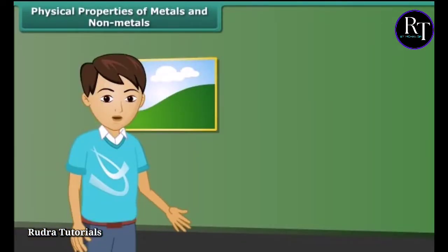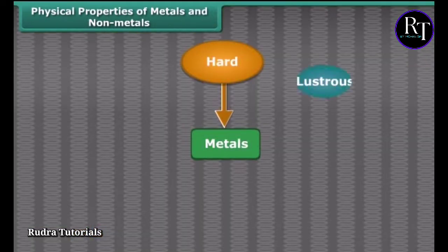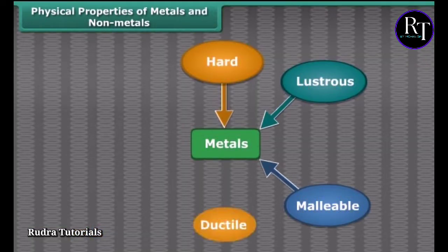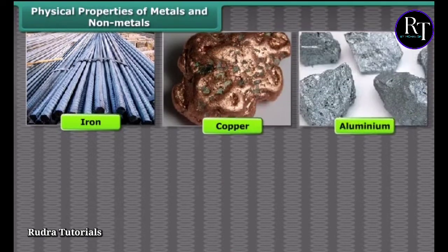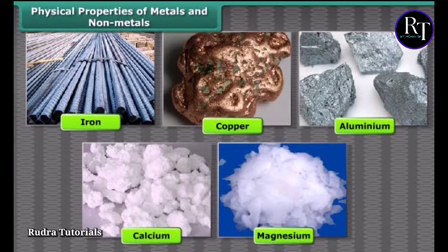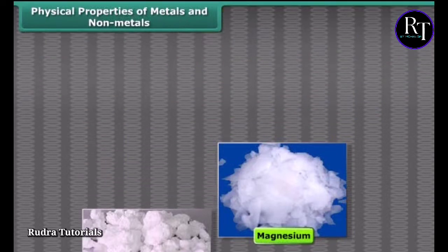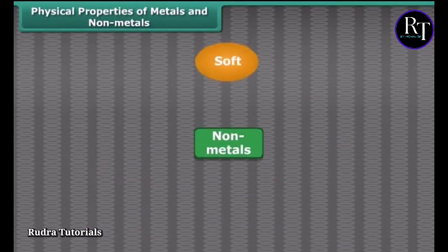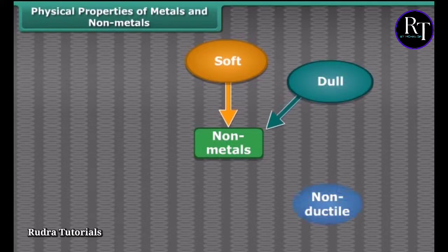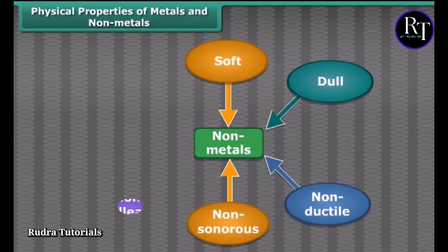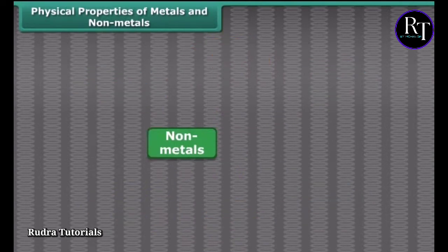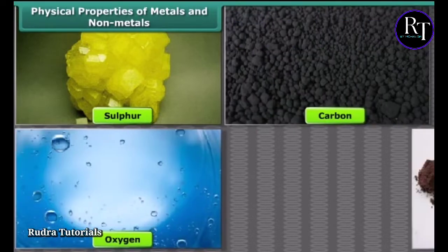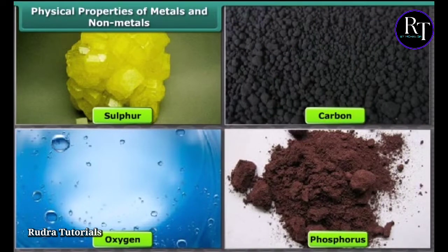So friends, by these properties we can say that metals are hard, lustrous, malleable, ductile, sonorous, and good conductors of heat and electricity. Iron, copper, aluminium, calcium, magnesium, etc. are examples of metals. Non-metals like coal and sulfur are soft, dull, non-ductile, non-sonorous, non-malleable, and poor conductors of heat and electricity. Sulfur, carbon, oxygen, phosphorus, etc. are examples of non-metals.